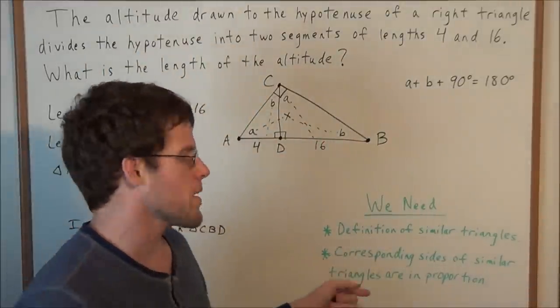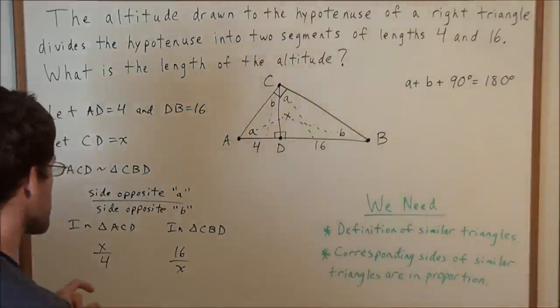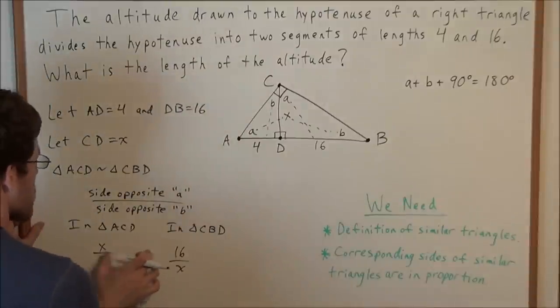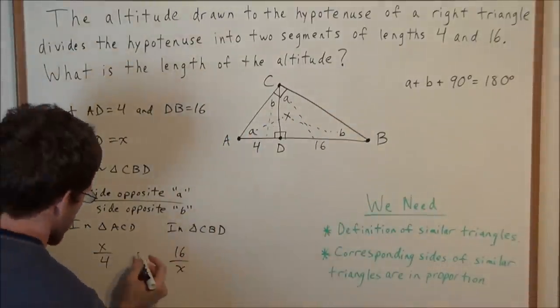So now using this theorem, corresponding sides of similar triangles are in proportion. That means when we set up a ratio that compares corresponding sides in these triangles, then those two ratios have to be equal.